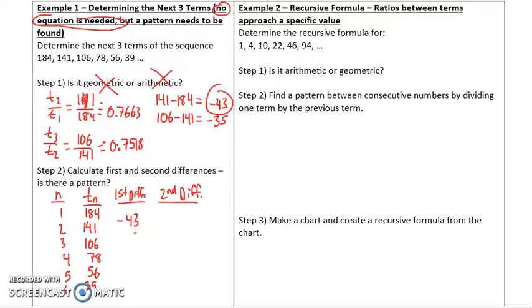What I was doing was finding the first differences because this is a check to see if it's linear. But I know it's not linear. So, why in the world am I using the first and second differences? To find a pattern. So, 78 minus 106, we get a value of negative 28. 56 minus 78 is negative 22. 39 minus 56 is negative 17.